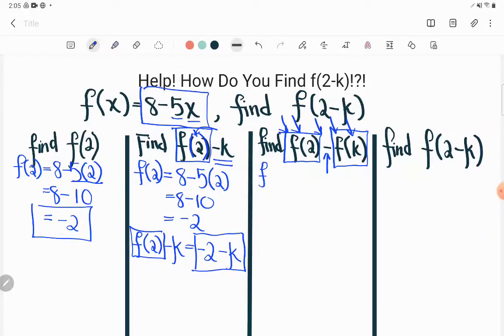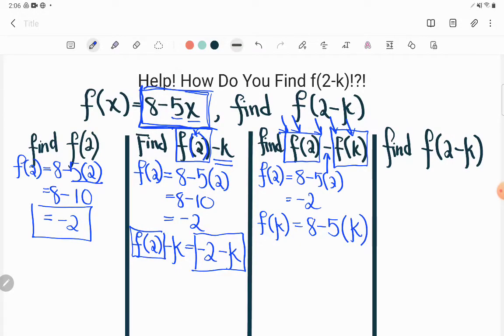So if I were going to find f of 2, I already did that, but I do it by plugging 2 in like we said, and we would get negative 2. But if I were going to find f of k, now I'm just doing one piece at a time so you can see it. Some of your math teachers might do all the pieces at the same time. That's okay too. But I'm doing one piece at a time so you can see it. So now I'll find f of k. So f of k is what I would get if I took this original function and plugged k in where x used to be. So let's do that. 8 minus 5 times k.